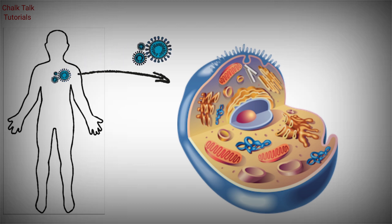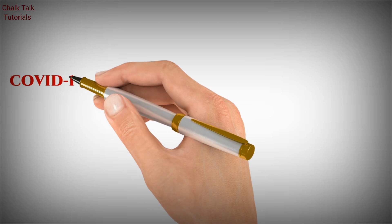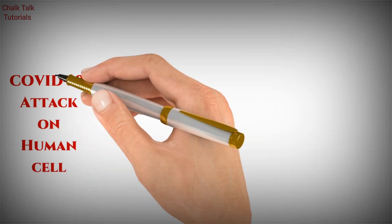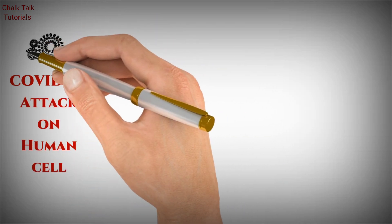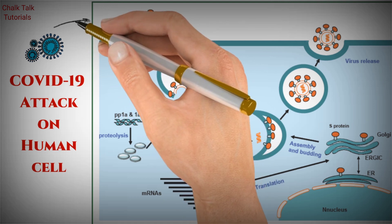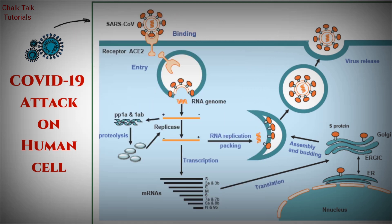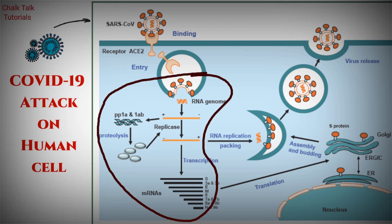Adsorption is the first step of COVID-19's attack on a human cell — basically this is the attachment of COVID-19 to binding receptors. Through this process, COVID-19 releases its genetic material, that is RNA, into the human cell.